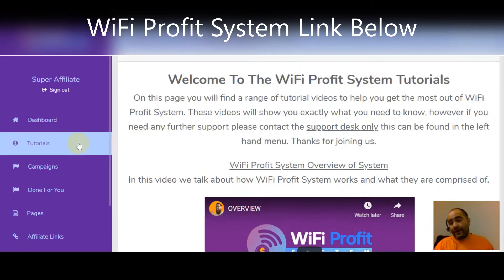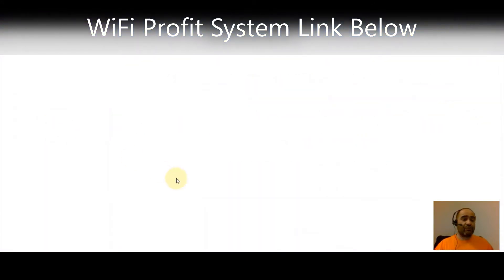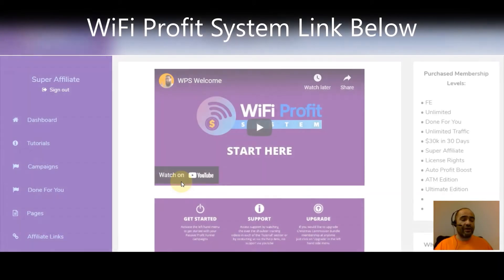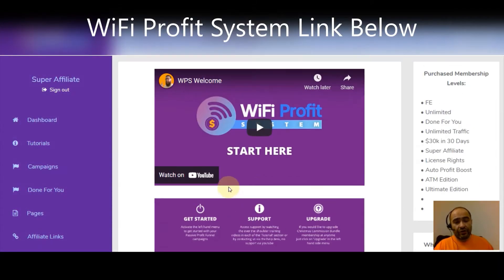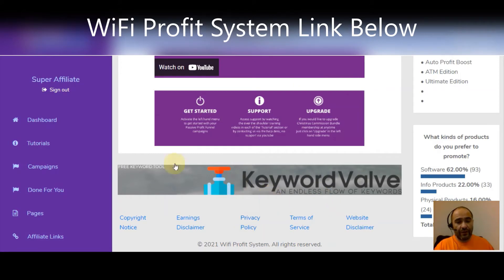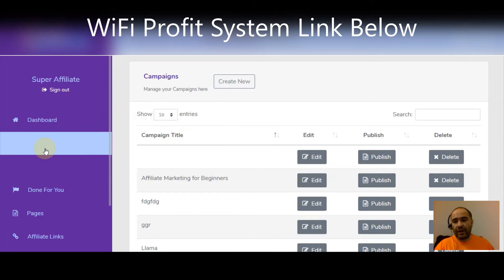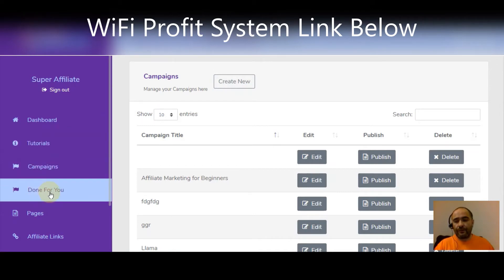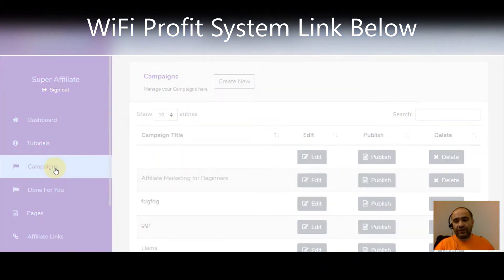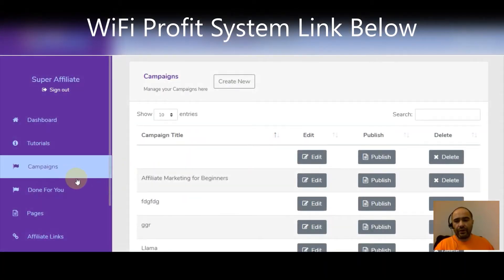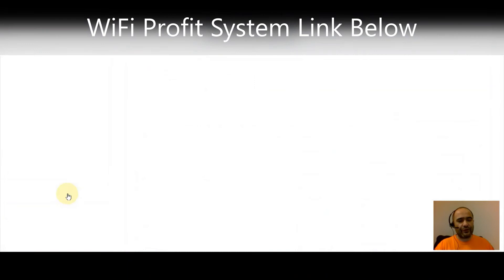The dashboard is just your main area that you see when you log in — nothing too crazy. You've got your keyword valve there which you can use at any time. Click on your campaigns and you've got all sorts of different campaigns that you've created all right there. You can create a new one real easily. You also have your done-for-you campaigns. I only think I got one in here — let's see — no, these are not the done-for-you ones, those are ones I've been using as demos.